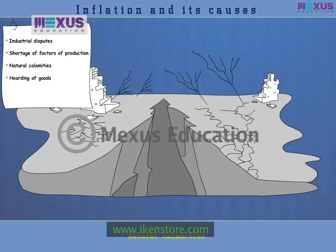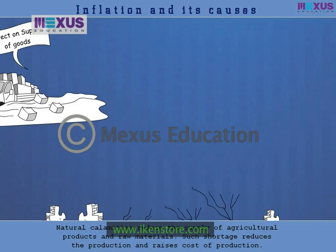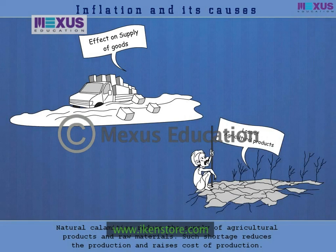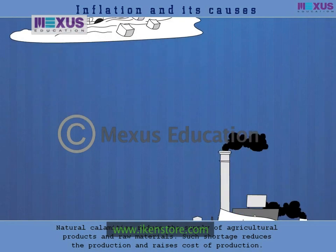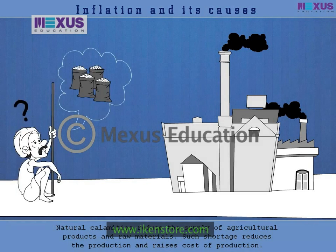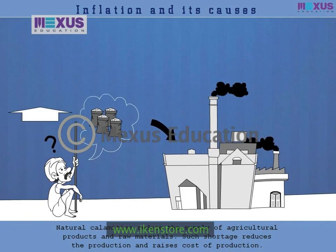Natural calamities like floods and droughts adversely affect the supplies of agricultural products. It affects industrial production as farmers are unable to supply raw materials to the industries. Such a shortage raises the cost of production.